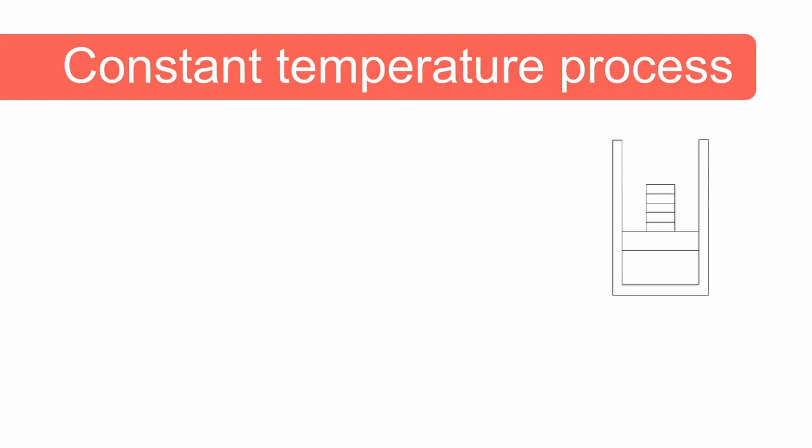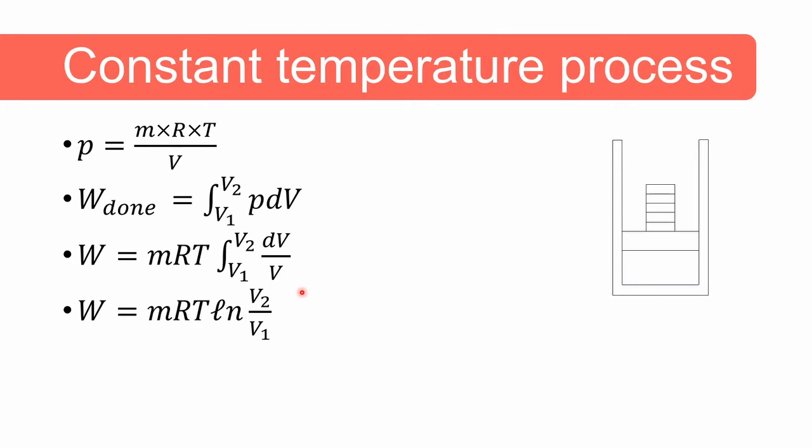Next let's look at a constant temperature process. Consider the piston cylinder setup with a number of weights on the piston. When one of the weights is removed the gas will expand and the temperature and pressure will drop. Heat can be added to keep the temperature constant and we can perform this expansion process gradually and slowly add heat at a sufficient rate to keep the temperature constant. For an ideal gas the relation between pressure and volume is given by this equation. M, R, and T are all constant in this scenario and in order to calculate work for this process we integrate the differential form of the work equation. We can use the ideal gas law to substitute the variable p here and we end up with an equation for work at a constant temperature process as shown here.